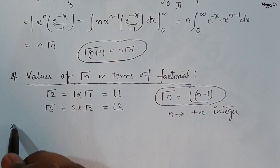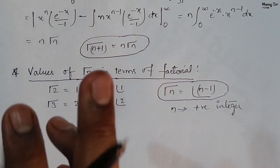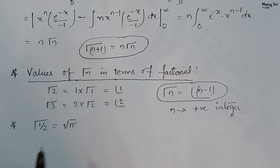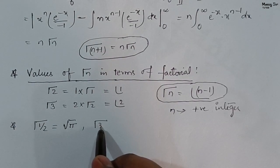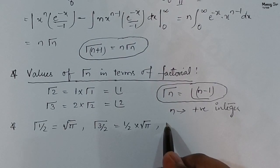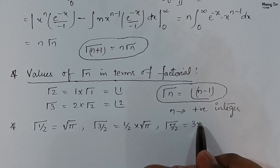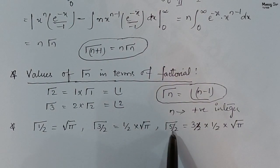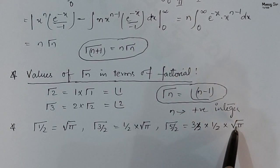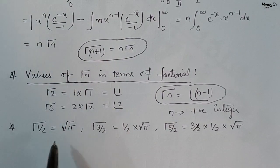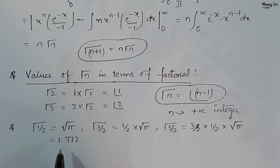The value of Gamma(1/2) equals root pi. If you want to find Gamma(5/2), this equals 3/2 times 1/2 times root pi. Similarly, Gamma(7/2) equals 5/2 times root pi. The numerical value of root pi equals 1.772.